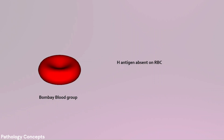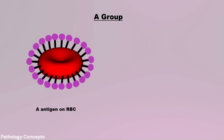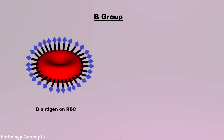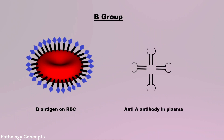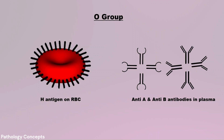In the A blood group, the antigen present on the RBC is the A antigen and the antibody present in the plasma is anti-B. In the B blood group, the antigen on the RBC is the B antigen and the antibody in the plasma is anti-A. In the O blood group, only H antigen is present on the RBC, and both anti-A and anti-B antibodies are present in the plasma.